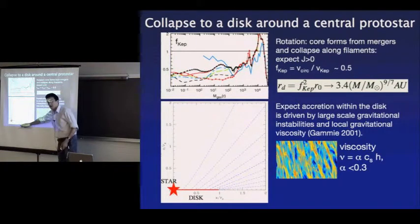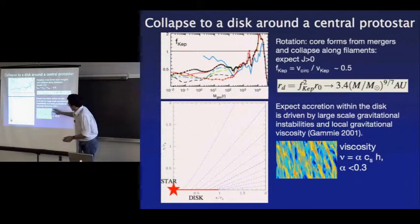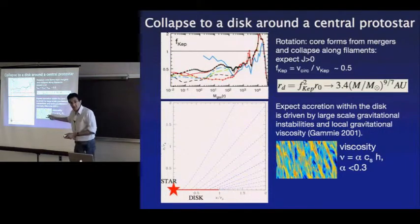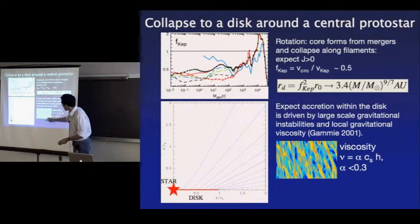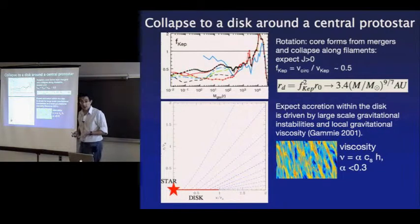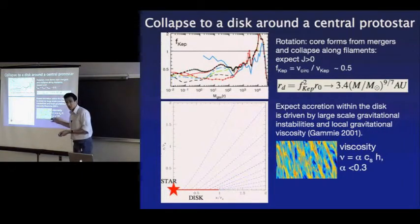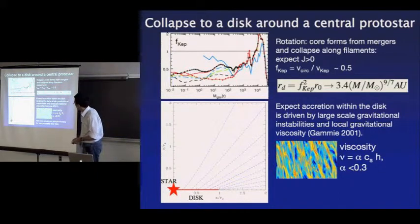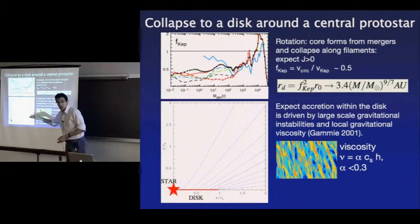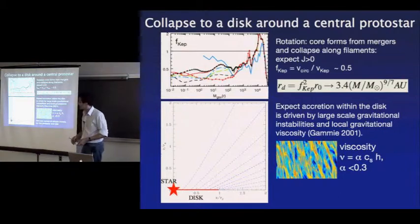Once you have a disc, some kind of viscous process will transfer angular momentum outwards and mass inwards, probably driven by self-gravity at the beginning. We'll assume a viscosity parameter alpha of 0.3 — roughly what Charles Gammie sees in his two-dimensional simulations — and model the structure of such a disc.